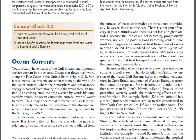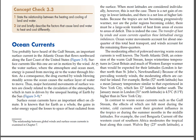The moderating effect of poleward-moving warm ocean currents is well known. The North Atlantic Drift, an extension of the warm Gulf Stream, keeps wintertime temperatures in Great Britain and much of Western Europe warmer than would be expected for their latitudes. London is farther north than St. John's, Newfoundland. Because of the prevailing westerly winds, the moderating effects are carried far inland. For example, Berlin (52°N latitude) has a mean January temperature similar to that experienced in New York City, which lies 12 degrees of latitude farther south. The January mean in London (51°N) is 4.5°C (8.1°F) higher than in New York City.